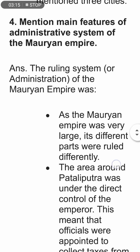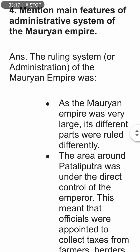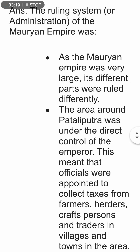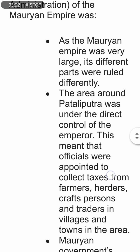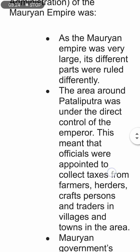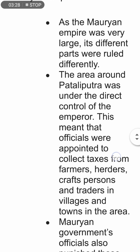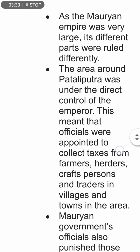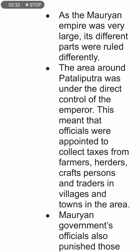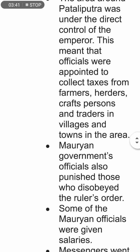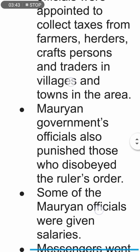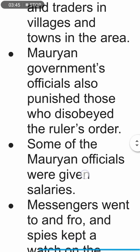Mention the main features of the administrative system of the Maurya Empire. As the Maurya Empire was very large, different parts were ruled differently. The area around Patliputra was under the direct control of the emperor. Officials were appointed to collect taxes from farmers, herders, craftspersons, and traders in villages and towns.